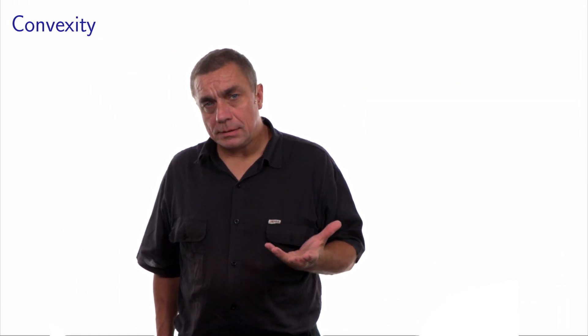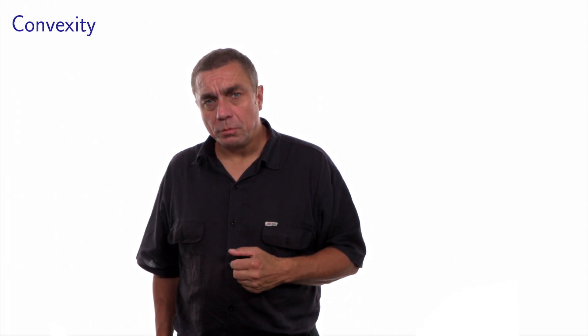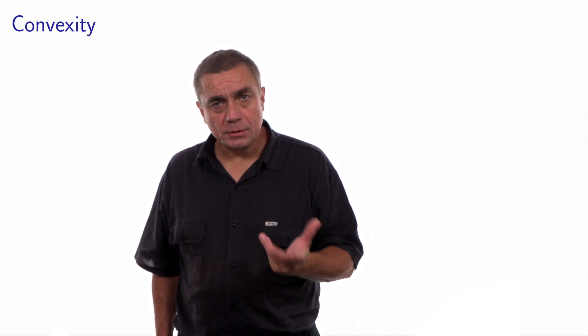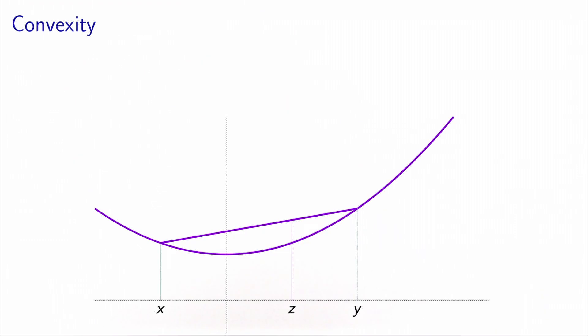The first property that is interesting for an optimization problem is called convexity, and this is what we will see in this video. The intuition of the concept of convexity is that a function is convex. Here is an example of a function which happens to be convex. If you can take any points x and y, so that if you draw a line between these two points, with x f of x and y f of y, the line is always above the function.